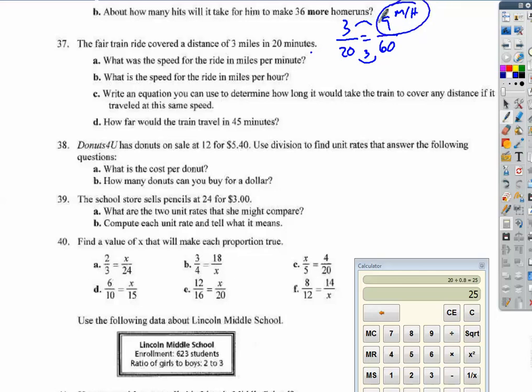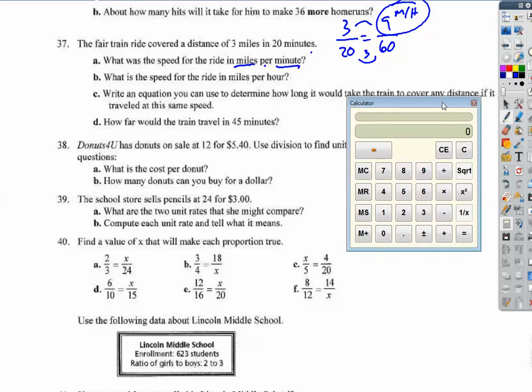And this is a very common thing to say, but we have to look at the units. Miles per minute. What does miles per minute mean? Miles divided by minutes. So we can't say 9 miles per hour. That would be wrong. So we have to do miles per minute. So take my miles, which is 3, divided by the minutes, which is 20. And so this would be 0.15 miles per minute. What is the speed for the ride in miles per hour? Well, that's a lot easier. It's just that 9 miles per hour.